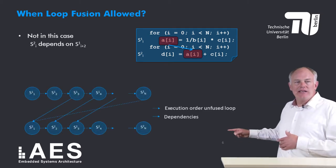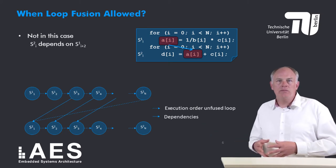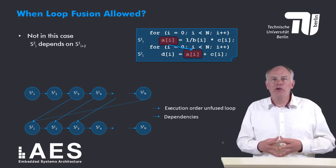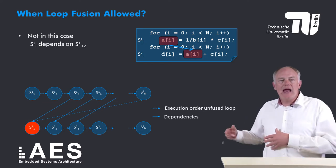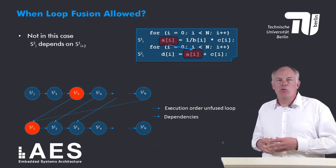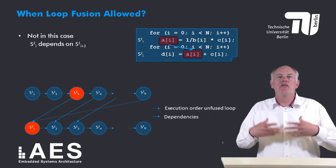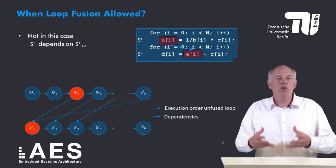This is illustrated in this graph. If we now fuse the two loops, for example, S2[1] will be executed before S1[3], which is not allowed since there is a data dependency from S1[3] to S2[1].